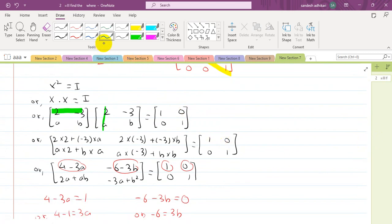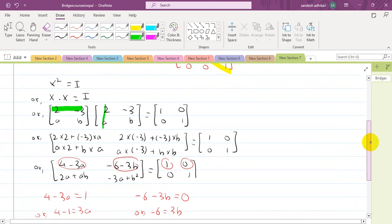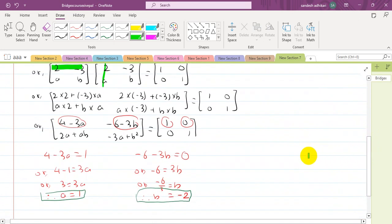The key is to know matrix multiplication, find the product, equate it to the 2×2 identity matrix, and solve for the unknown values. So a = 1 and b = -2.